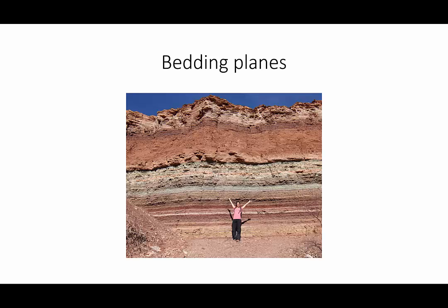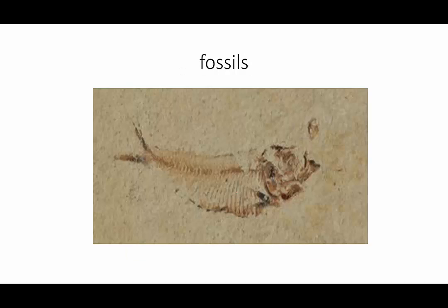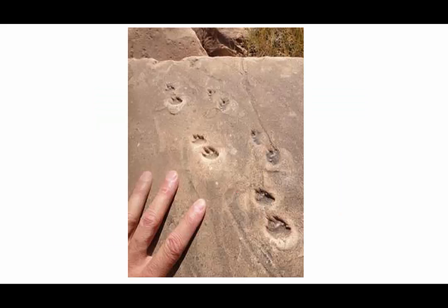How do you know if these bedding planes came from deposits in an ocean or in a lake? Well, fossils can help, like this fish fossil that shows that the shale and sandstone in the Monterey Formation of California was a shallow sea 10 to 12 million years ago. Or these reptile footprints in sandstone of the Grand Canyon, indicating that during the Permian, this area was composed of sand dunes.